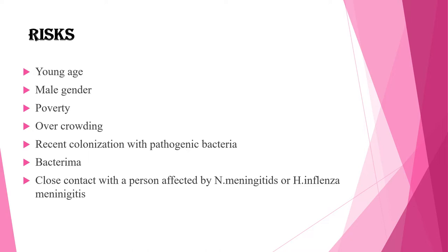The mode of transmission is through contact with respiratory tract secretions or droplets. The risk of meningitis is increased among infants and young children with occult bacteremia. Overall risk factors include young age due to lack of immunity, male gender, poverty, overcrowding, recent colonization with pathogenic bacteria, and close contact with a person affected by meningitis or Haemophilus influenzae.